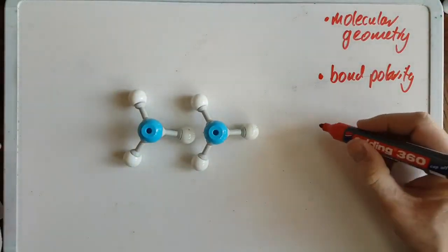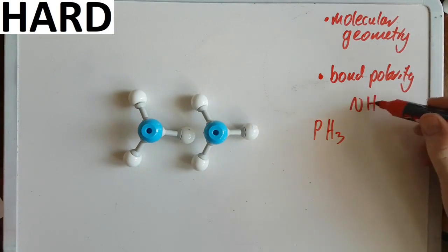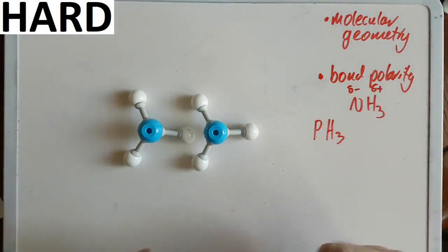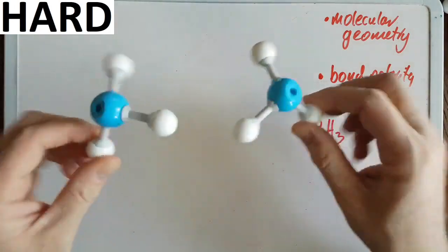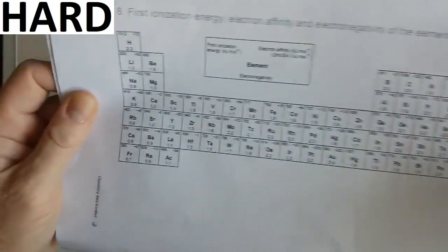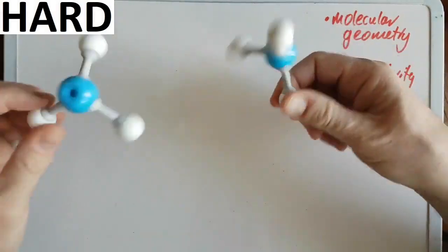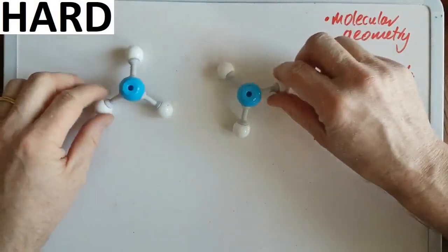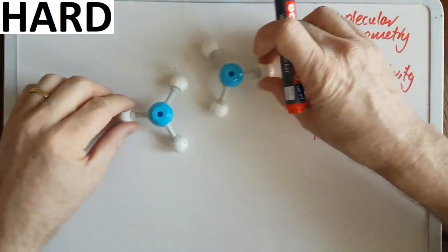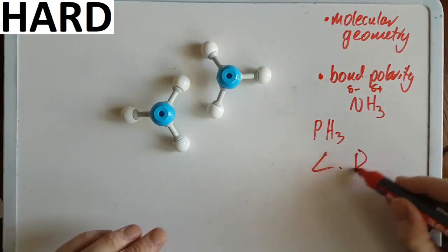PH3 — I got this wrong once on the IB test. Phosphorus is in group 15, just like nitrogen, so I assumed it would behave like ammonia. But this is a trick: PH3 does have the same molecular geometry, trigonal pyramidal, but phosphorus and hydrogen have the same electronegativity, both 2.2. So this molecule is completely non-polar; there is no dipole. Again, London dispersion forces are the only intermolecular interaction. I'd expect PH3 to be a gas, since it's the weakest intermolecular force.